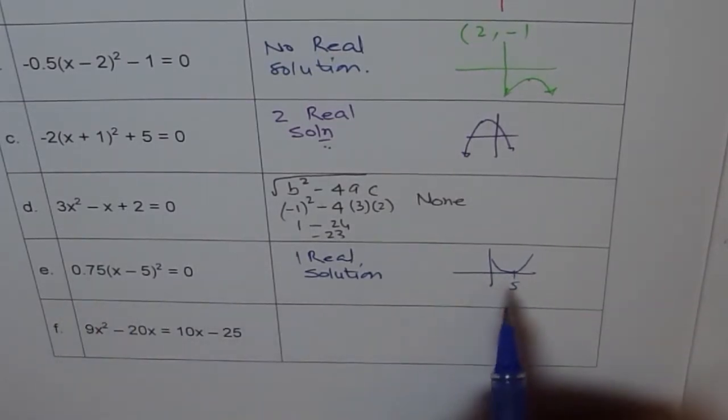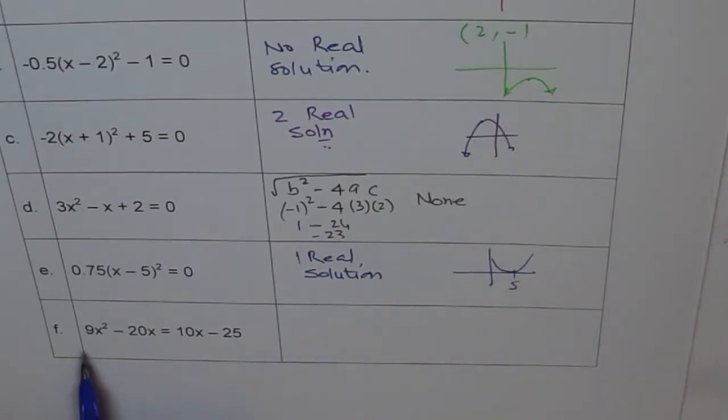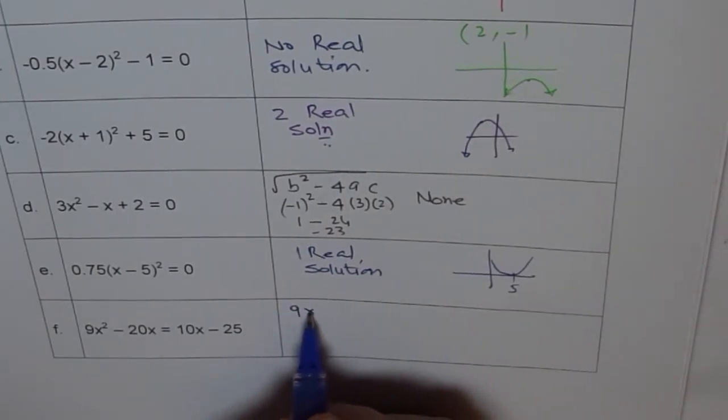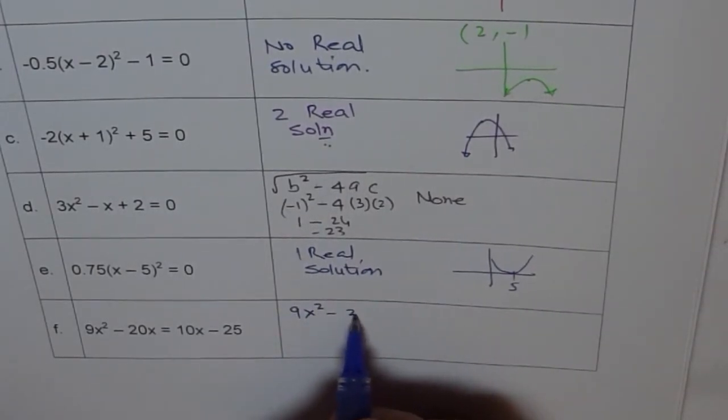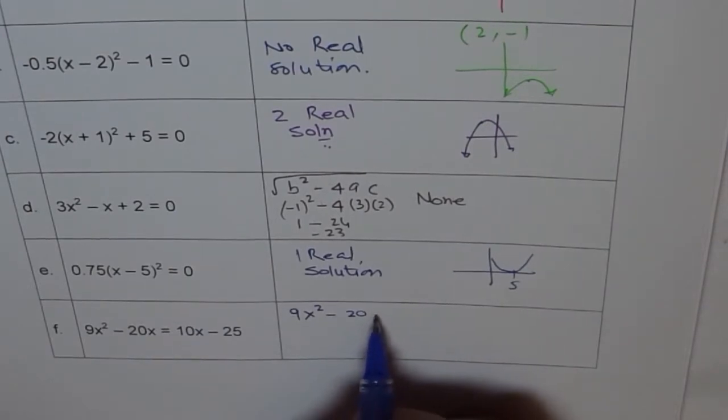Here in this equation we have vertex at 5 and 0, and it is going up, that means we have one real solution. Now in this particular case we need to reorganize. So let's reorganize and see what happens. 9x² - 20x, now bring this 10 to this side so it goes -10x + 25 = 0. And then we get 9x² - 30x + 25 = 0.